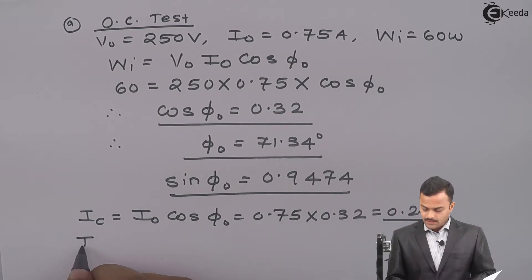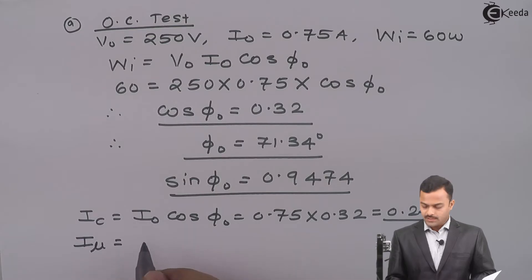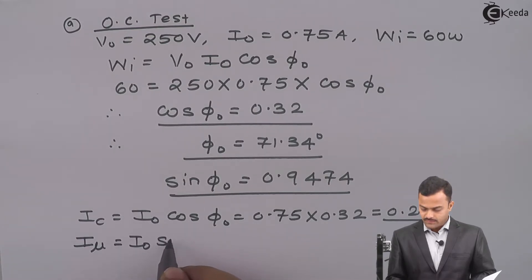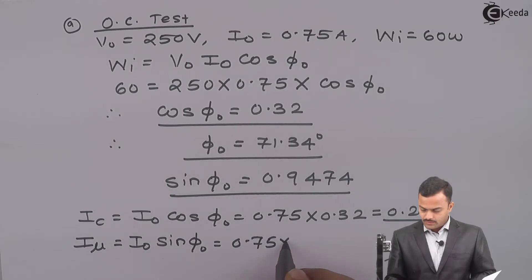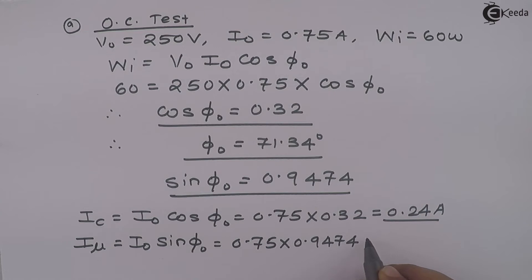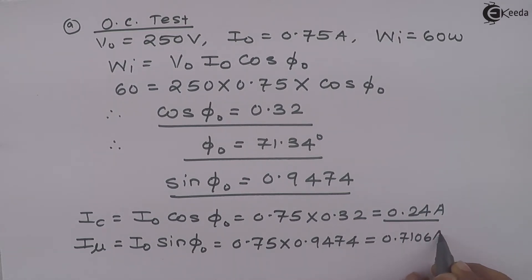Similarly, Iμ magnetizing component of current is I0 sin φ0 equal to 0.75 multiplied by 0.9474. The answer is 0.7106 ampere.